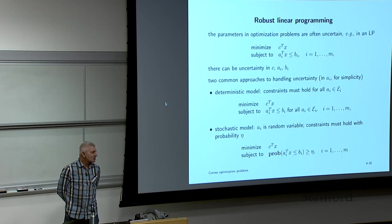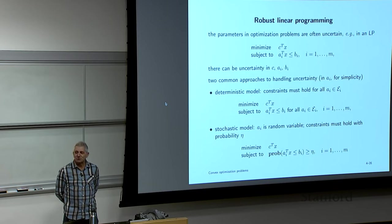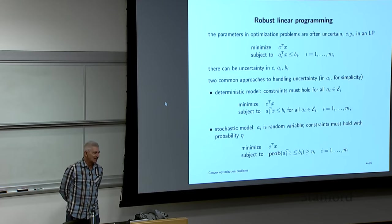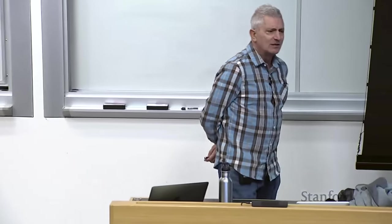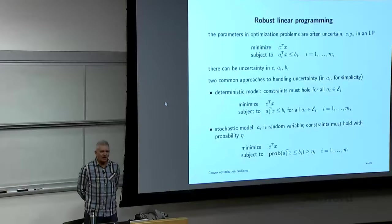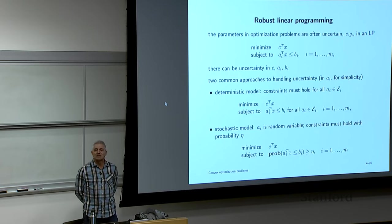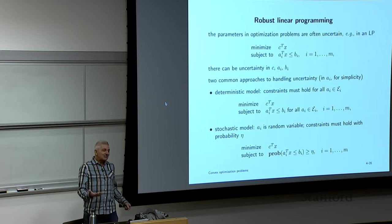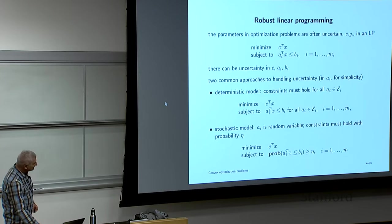A brief note: claiming probability 99.9% requires knowing the tails of your distribution extremely well, which no one actually does in practice. High probability requirements really just mean 'please, I really want this to hold.' But it's still a useful way to formulate the problem.